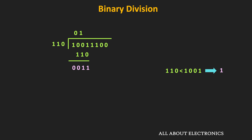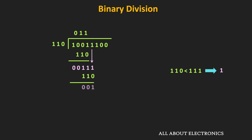As a next step, we bring down the next bit of the dividend, which is 1. Once again, we compare 111 with 110. Since 111 is greater than 110, we can perform the subtraction, so in the quotient we write 1. After performing the subtraction, we get 1.